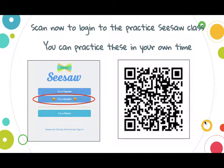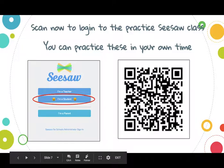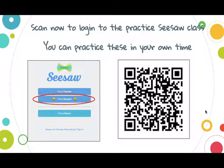What I want you to do now is open up Seesaw and log in to the practice class. You need to scan the QR code on the screen with a device — open up your phone or your iPad and log in. I'll give you a couple of seconds to do it.